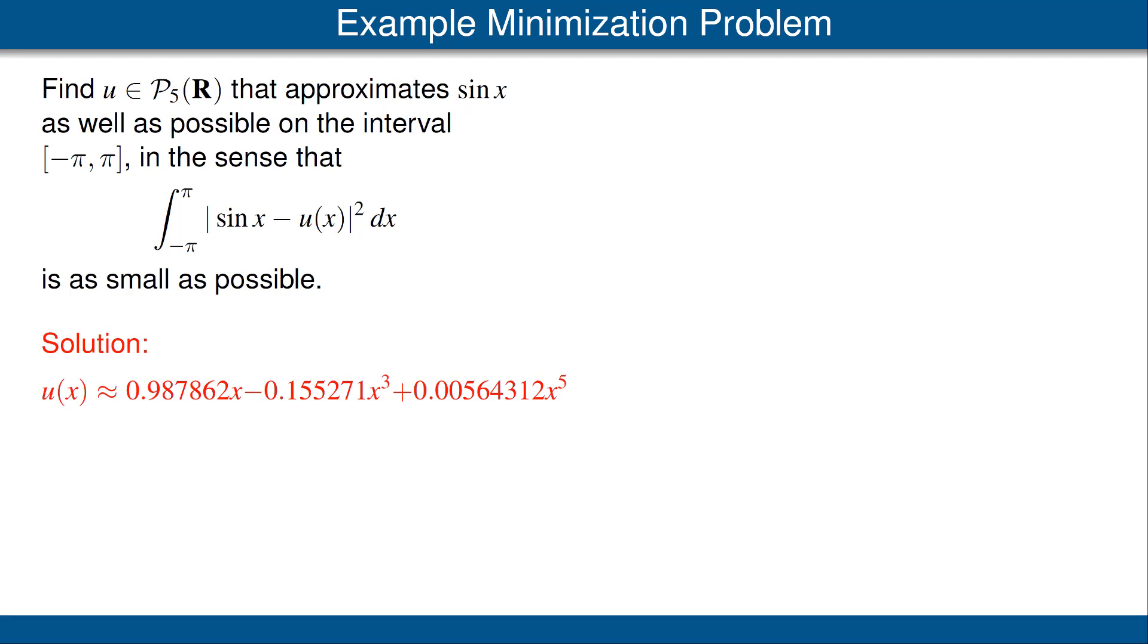You might be surprised that we didn't get the solution given by the Taylor series. Recall from calculus that the Taylor series, degree 5 for the sine function, is x minus x cubed over 3 factorial plus x to the fifth over 5 factorial.